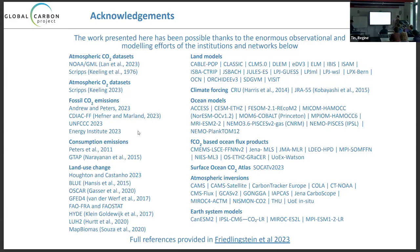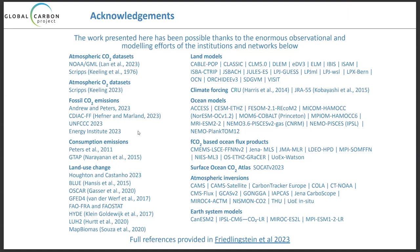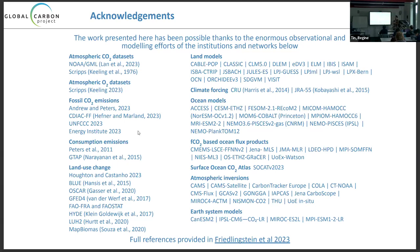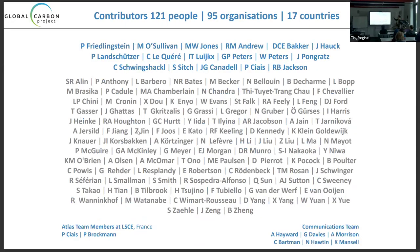I want to start off by acknowledging where the report comes from — the massive effort of numerous observation and modeling networks all over the globe, covering all components of the carbon cycle: fossil fuel, land, and ocean observation networks. We have tens of modeling teams from all over the globe running these simulations, giving us estimates of what the land and the ocean are doing. Specifically, the report from December had 121 co-authors across 95 organizations and 17 countries.